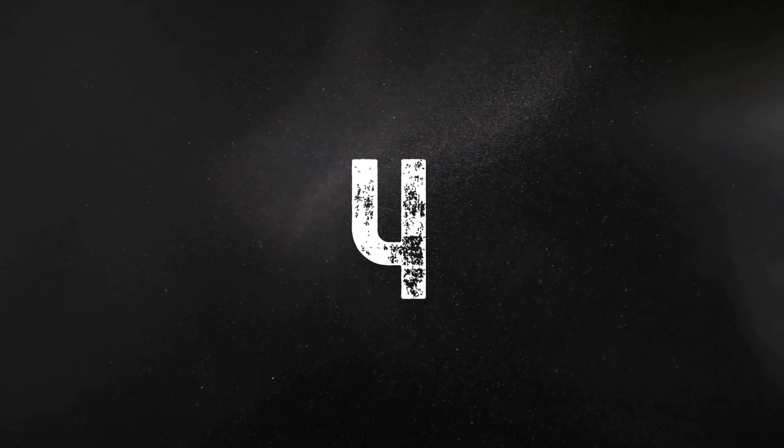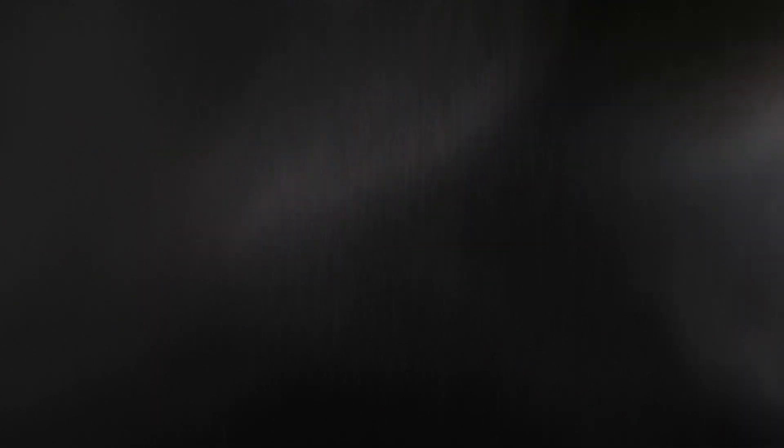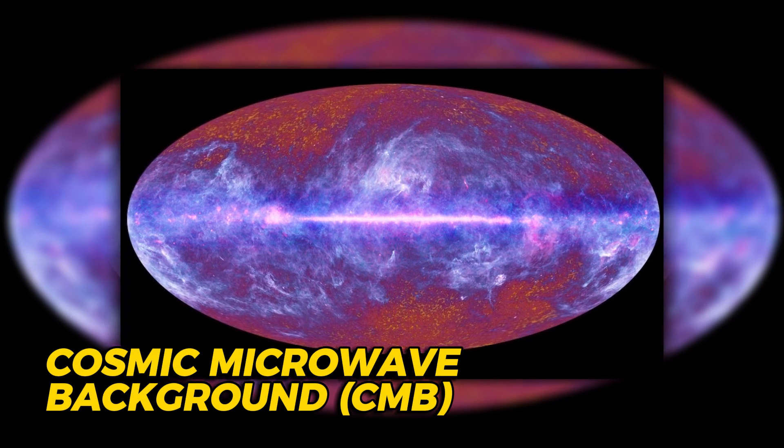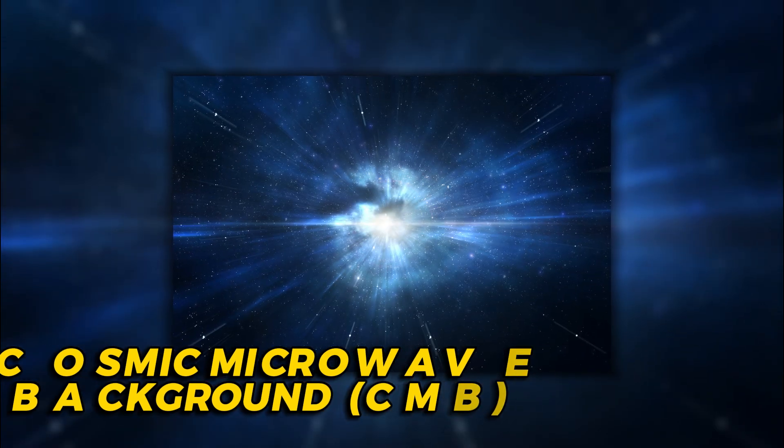The Cosmic Microwave Background, or CMB for short, is the oldest light in the universe, dating back to the Big Bang. It's a faint glow that is present in all directions of the sky, and it contains a wealth of information about the early universe.